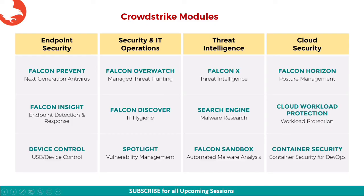The last solution is Cloud Security. The three modules are Falcon Horizon, Falcon Cloud Workload Protection, and Falcon Container Security. The first module is Falcon Horizon, which is the module for posture management. It streamlines cloud security posture management across the application development lifecycle for multi-cloud environments, enabling you to securely deploy applications in the cloud with greater speed and efficiency. The second module is Falcon Cloud Workload Protection, which provides comprehensive breach protection for workloads and containers, enabling you to build, run, and secure applications with speed and confidence. The third module is Falcon Container Security, which automates the secure development of cloud-native applications, delivering full-stack protection and compliance for containers, Kubernetes, and hosts across the container lifecycle.